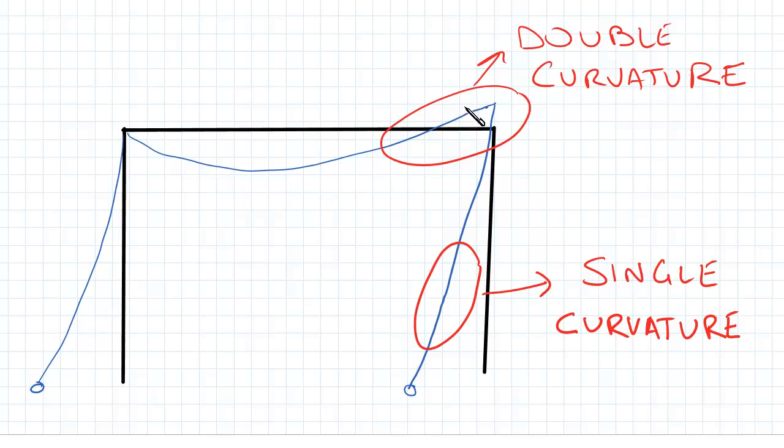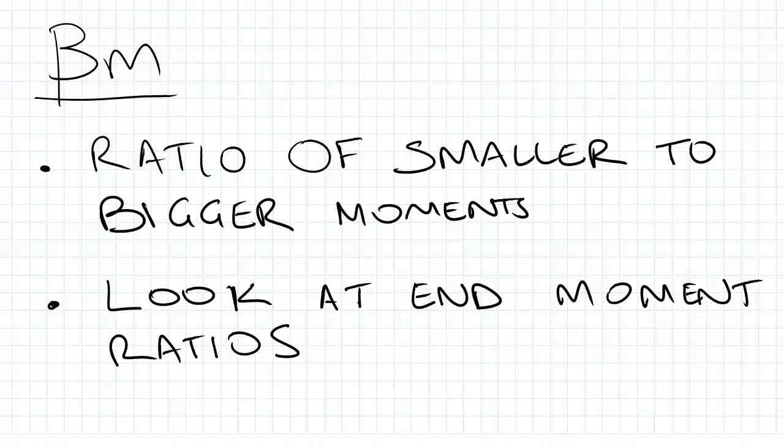What we can see is there's a bit of hogging at the top and sagging for the beam. For the column, it is sagging. We call this double curvature for the beam because we have hogging and sagging, and for the frame itself we just see sagging, which we would call single curvature.